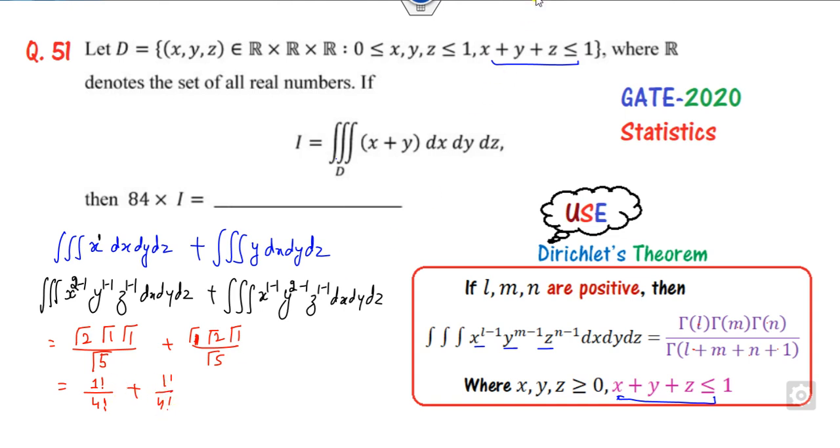So what is 1 upon 4 factorial? 1 upon 4 factorial is nothing but 1/24 plus 1/24. So what is the answer? 1/12.